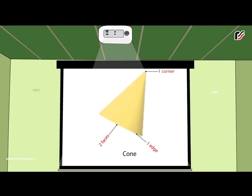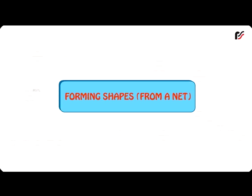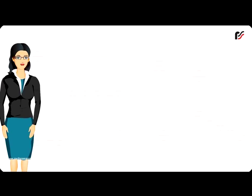Forming shapes from a net. Net: When a solid shape is made using a flat shape, it is called a net.